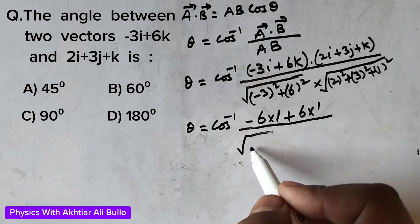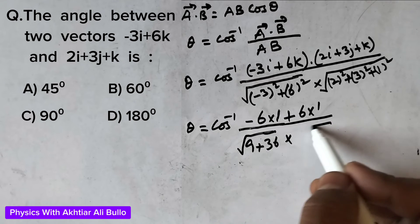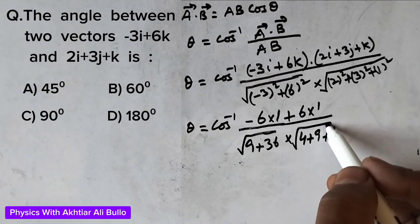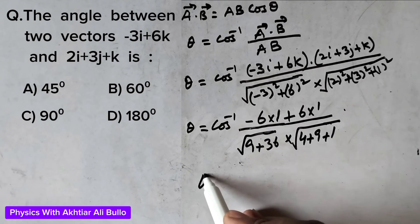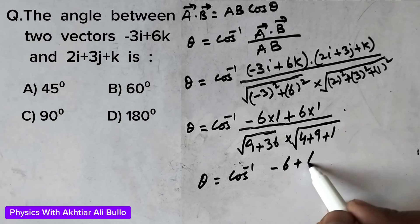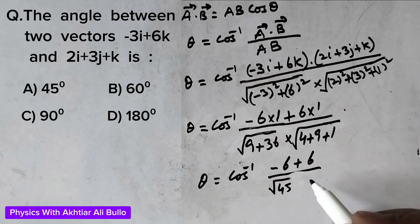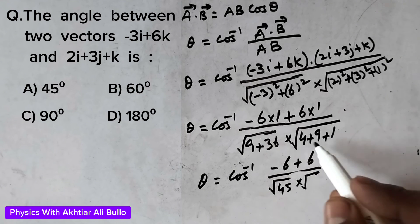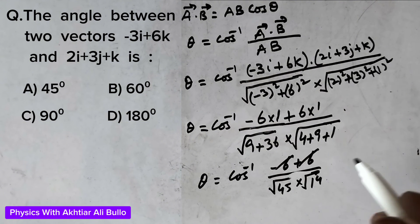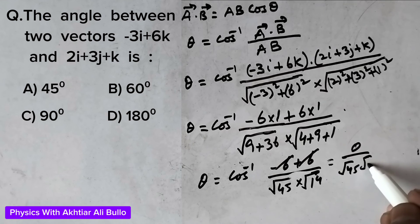The square of minus 3 is 9, plus the square of 6 is 36 — giving 45 under the first root. The square of 2 is 4, plus the square of 3 is 9, plus the square of 1 is 1 — giving 14 under the second root. So theta equals cos inverse of (minus 6 plus 6) divided by under root 45 times under root 14. Since plus 6 cancels with minus 6, the numerator is 0, giving 0 over under root 45 times under root 14, which equals 0.